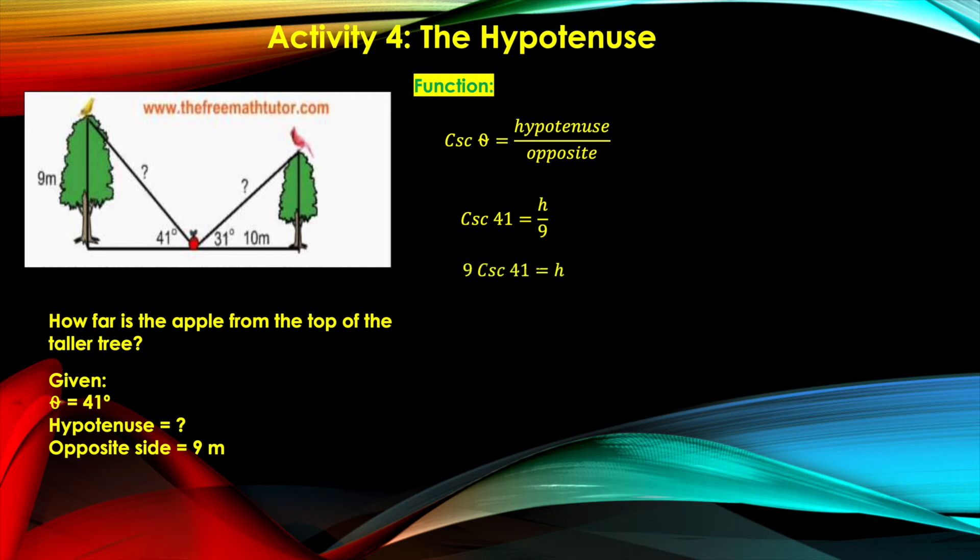Doing cross multiplication, 9 cosec 41° equals h. Then we determine the value of cosec 41° using the Desmos calculator, which is linked to your module.